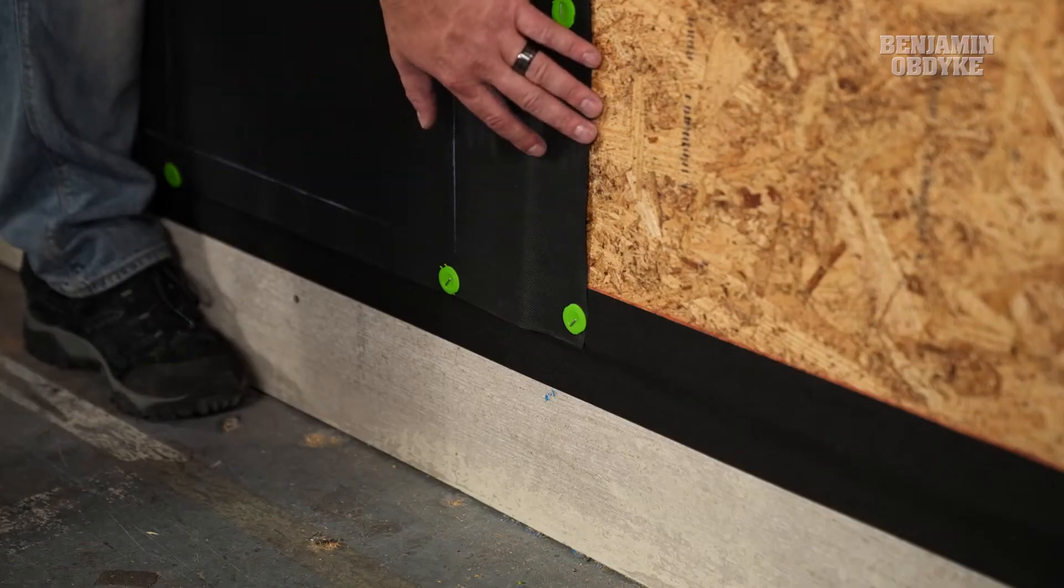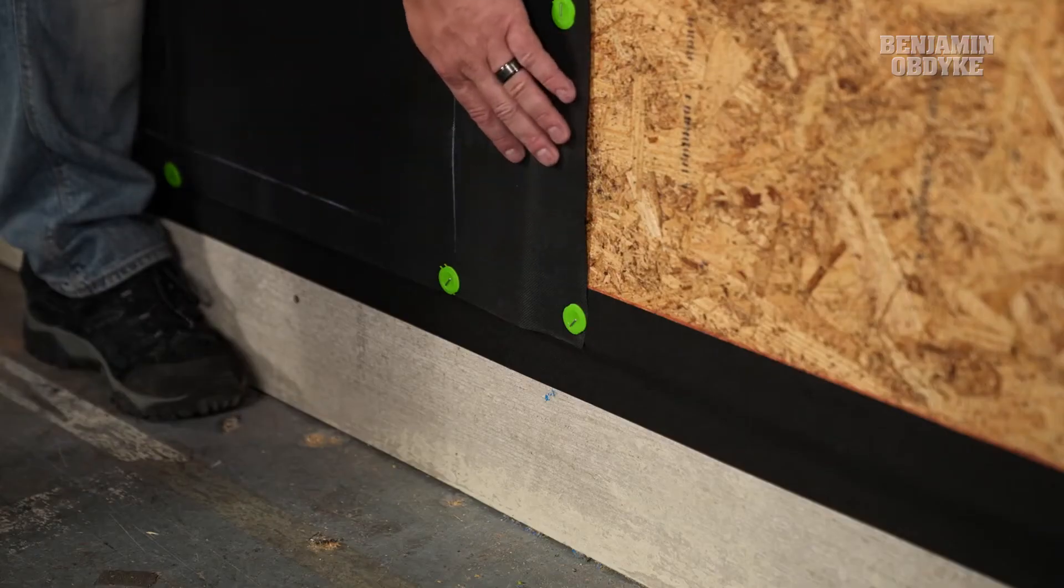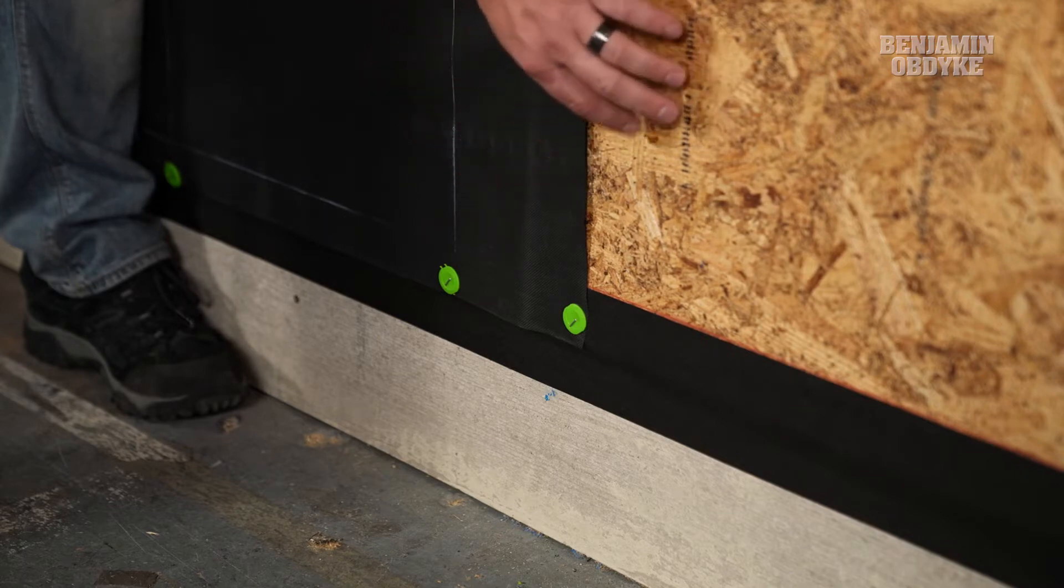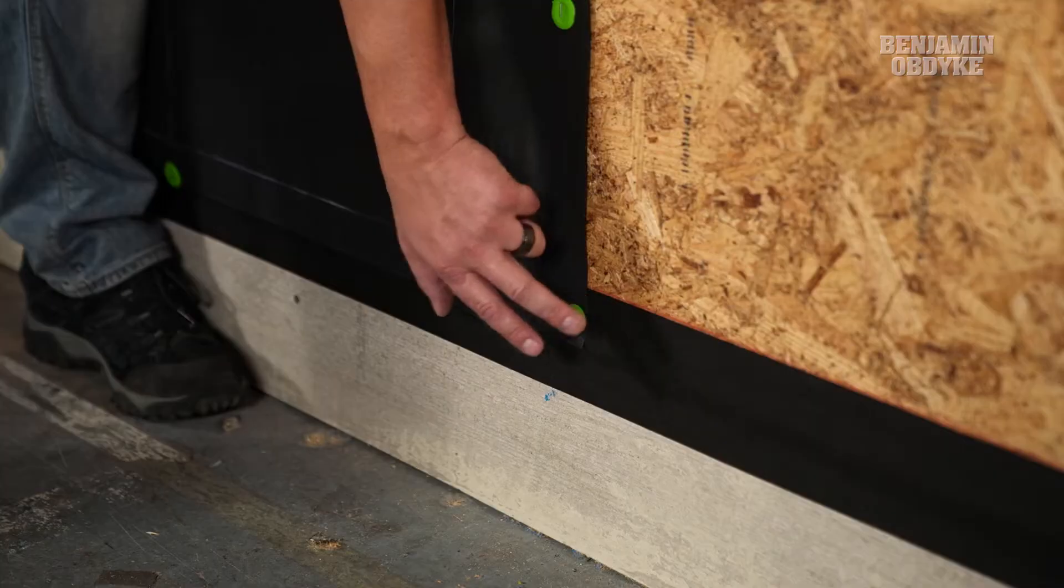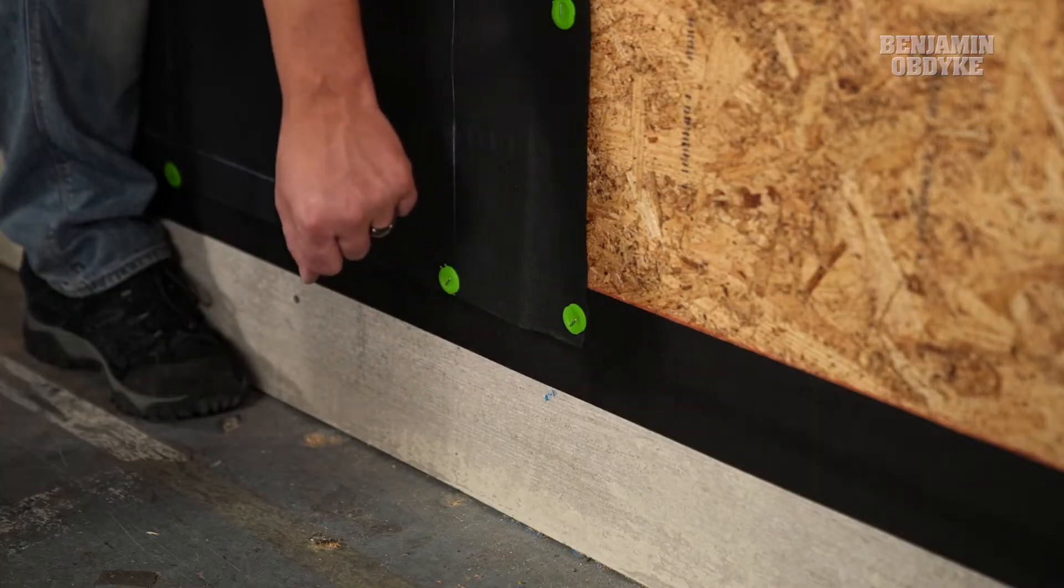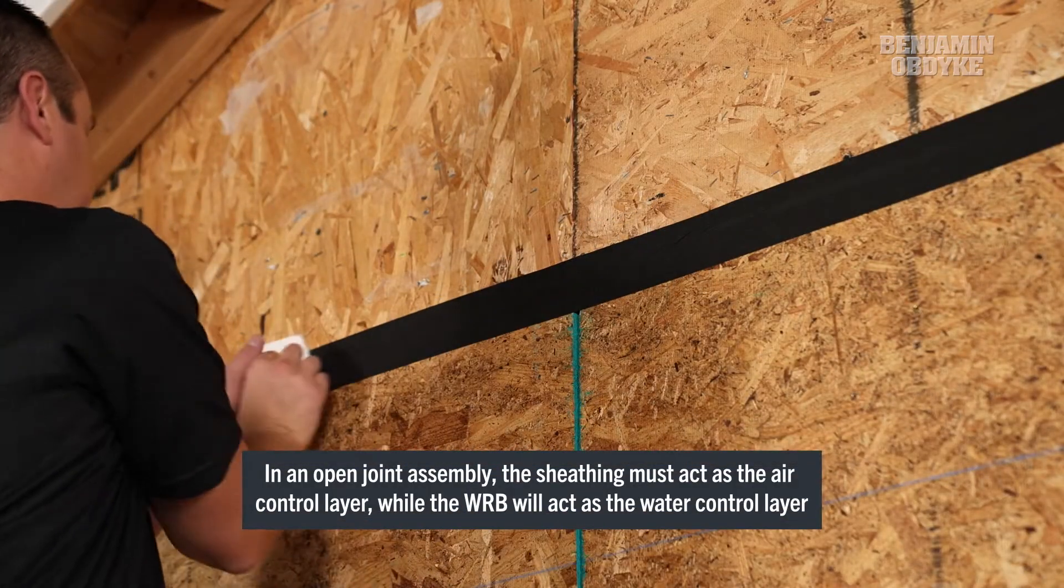With this installation, we are using our InvisiWrap as our UV control layer and we are designating our sheathing as our air control. We want to make sure that all of our seams and transitions from the bottom of our wall to our foundation are taped with our Hydroflash UV Plus.